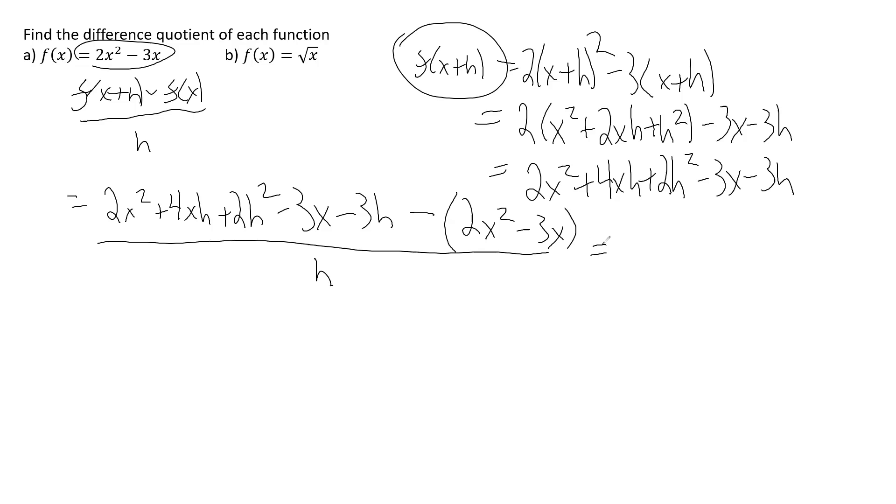Make sure we put that in parentheses because you're subtracting that whole quantity all over h. Now, we can cancel out some terms here. So the 2x squared cancel, the minus 3x cancel because you're subtracting a negative, which is going to add it. So the terms that remain are 4xh, 2h squared, and minus 3h. All of that's over h.